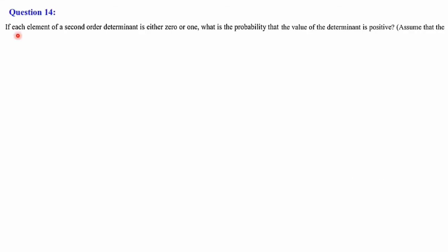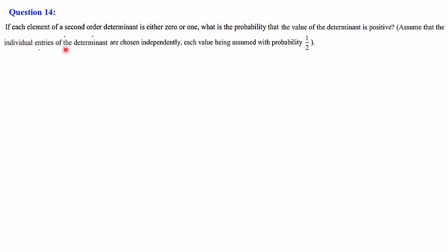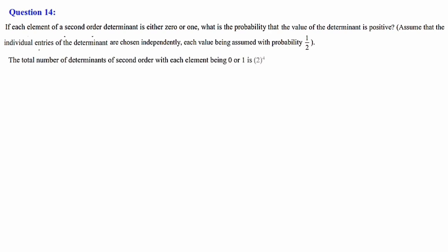Question number 14: If each element of a second order determinant is either 0 or 1, what is the probability that the value of the determinant is positive? Assume individual entries are chosen independently, each with probability 1/2. We are forming a 2×2 determinant using these two numbers. The total possible ways is 2 to the power 4, since there are 2 numbers and order 2×2 gives 4 positions. So total ways = 16.